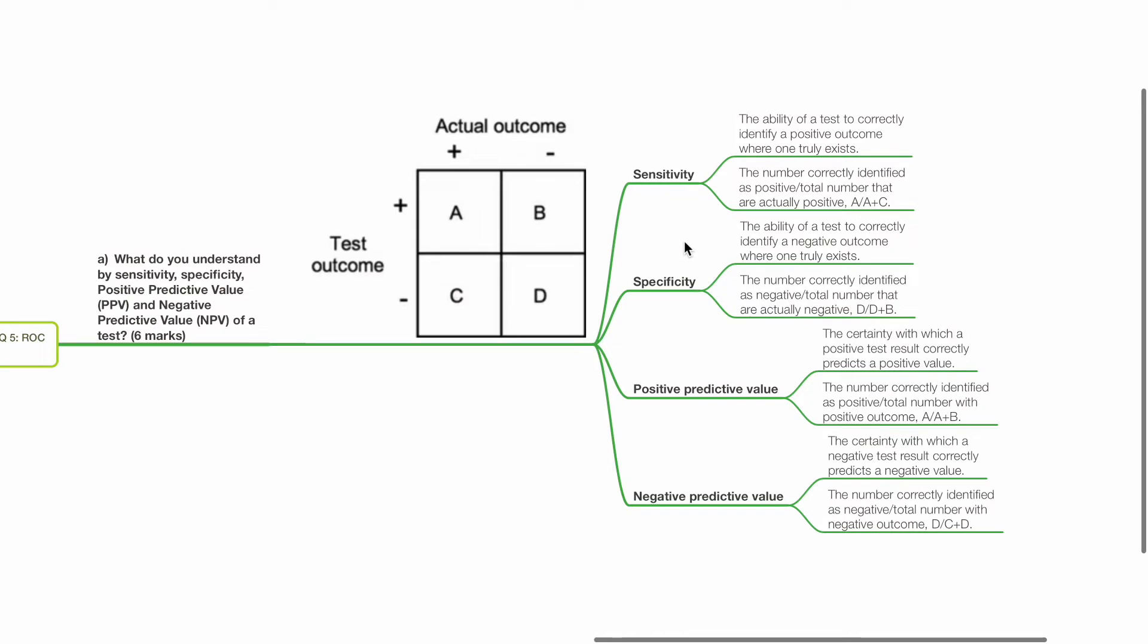Sensitivity is the ability of a test to correctly identify a positive outcome where one truly exists. It is the number correctly identified as positive divided by total number that are actually positive.